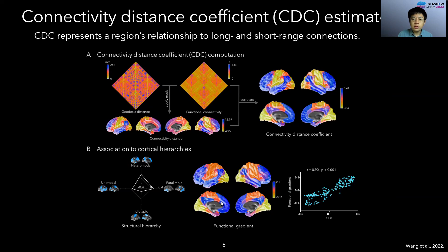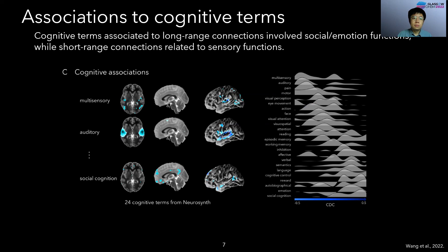We also estimated functional principal gradients and found a significant correlation between functional gradients and the CDC. We then assessed the associations between long-range connectivity and cognitive terms. We performed a meta-analysis based on 24 cognitive terms from neuroscience, and found that cognitive terms associated with long-range connections involved social cognition and emotion functions, while short-range connections related to multi-sensory and auditory processing.